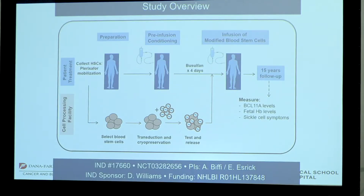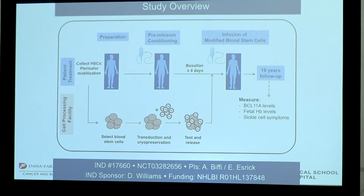The first step for patients in our study is to have hematopoietic stem cells or HSCs collected via peripheral stem cell mobilization using plerixafor as a stem cell mobilizing agent. The cells are then transferred to a cell processing facility where blood stem cells are selected, transduced with our BCL11A vector, and cryopreserved. When the product undergoes testing and meets all release criteria, the patient is admitted to the transplant unit to receive myeloablative conditioning with busulfan before infusion of the gene-modified cells.